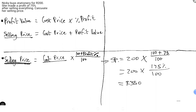Nikki says: this cost me 100 percent — the 100 percent is the 200 rands. Let's add 75 percent on top of that 100 percent, giving a total of 175 percent. The 100 percent is the 200 rands that goes back into Nikki's pocket, and the 75 is what's over and above what she spent. Divided by 100 because it's a percentage. We put that into a calculator and get 350 rands — that's what Nikki sold the stationery for.